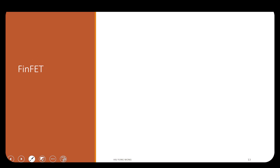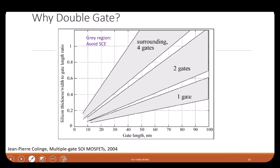Now I will talk about FinFET. Here I show something called double gates. The plot shows gate length — 10 nanometer, 20 nanometer, all the way to 100 nanometer — and the silicon thickness to gate length ratio. If it is within the gray region, then you have a good transistor with low short channel effect.